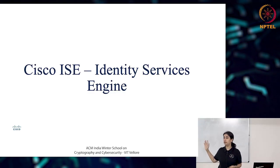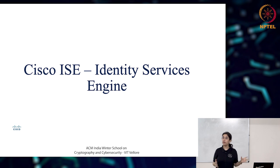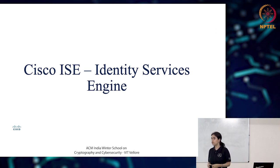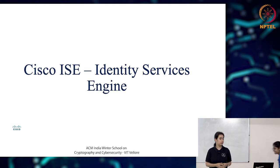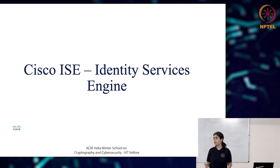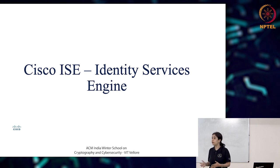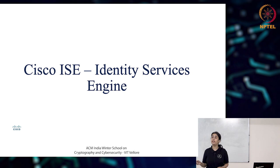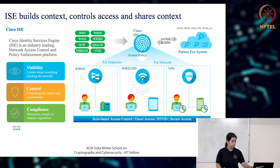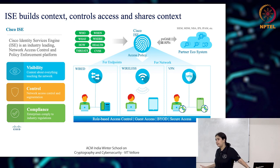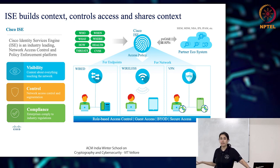We were talking about AAA servers. Like with firewalls, we talked about firewall concepts and then Cisco firewalls. Similarly for AAA, we're talking about AAA concepts and then the Cisco AAA server, which we call ISE — Cisco's Identity Services Engine. ISE does whatever a AAA server does, plus a lot of other things.